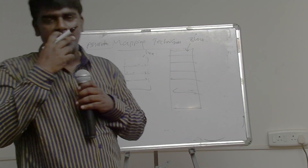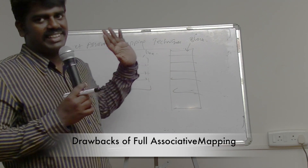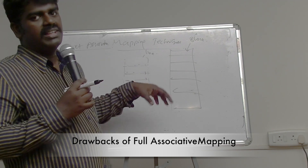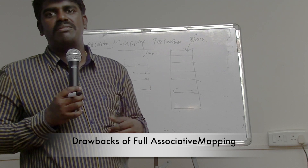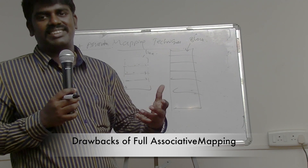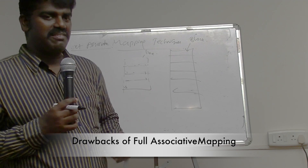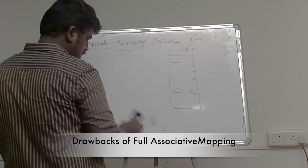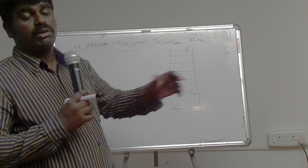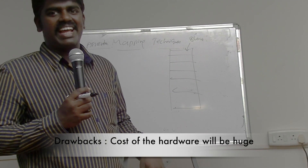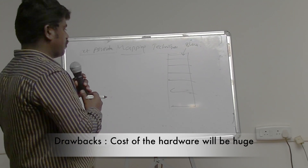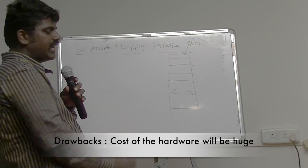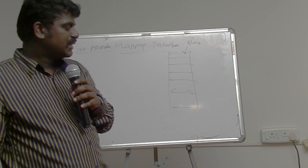To avoid that drawback, we use associative mapping, where any block can be placed into any cache line. However, associative mapping also has a drawback: it needs more comparators, so more hardware is required and the cost of the architecture becomes very high. For each processor address generated, it must check all the tags in the cache, making it cost-ineffective.